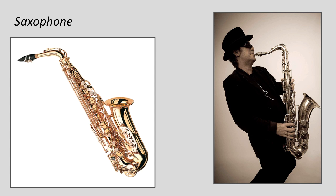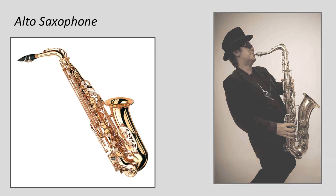This picture shows the alto saxophone, which has a very similar mouthpiece to the clarinet. And with that similar mouthpiece, you're going to get a similar sound, but it definitely has its own unique sound. Let's see what you think.